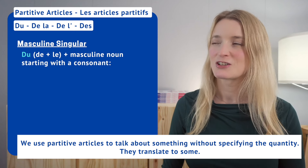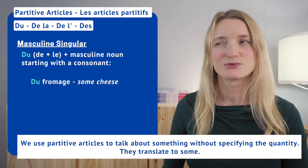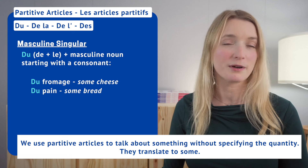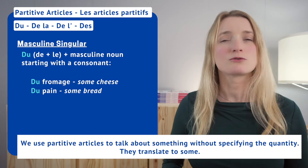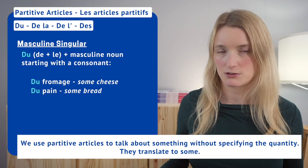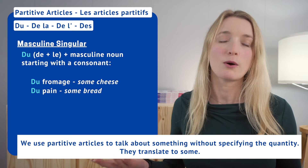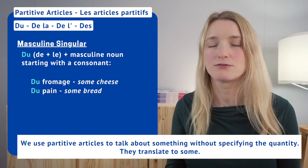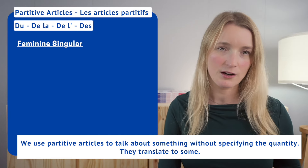For example: du fromage, du pain — 'some cheese, some bread.' You don't know the quantity, you don't know how much — it's an unspecified quantity. Then for feminine singular we have de la, used before a feminine noun starting with a consonant. For example: de la farine, de la viande — we don't know how much.